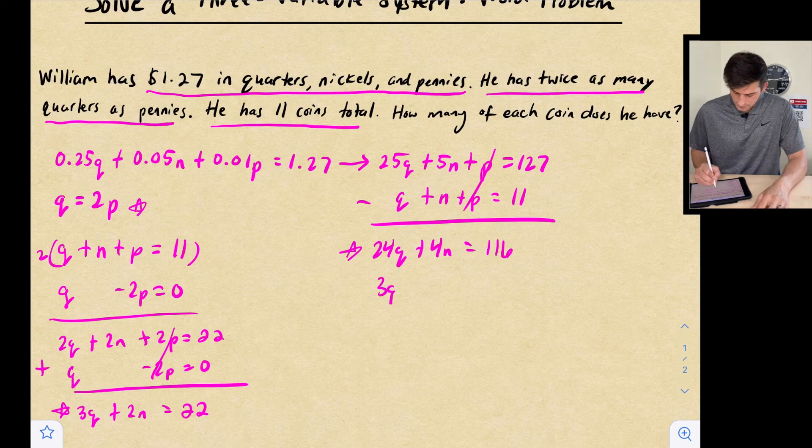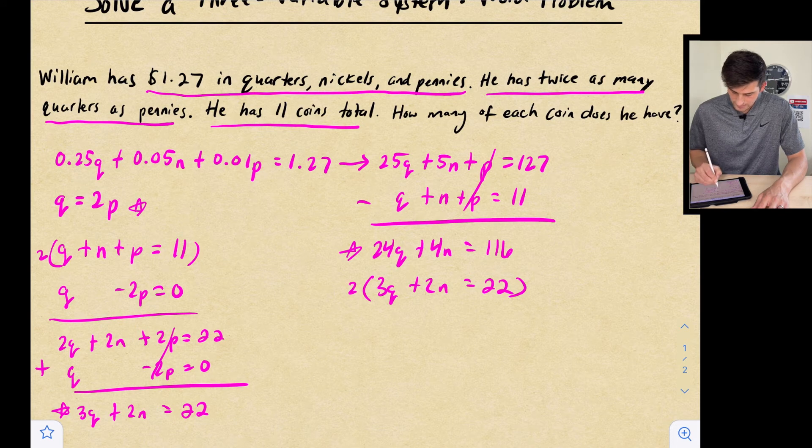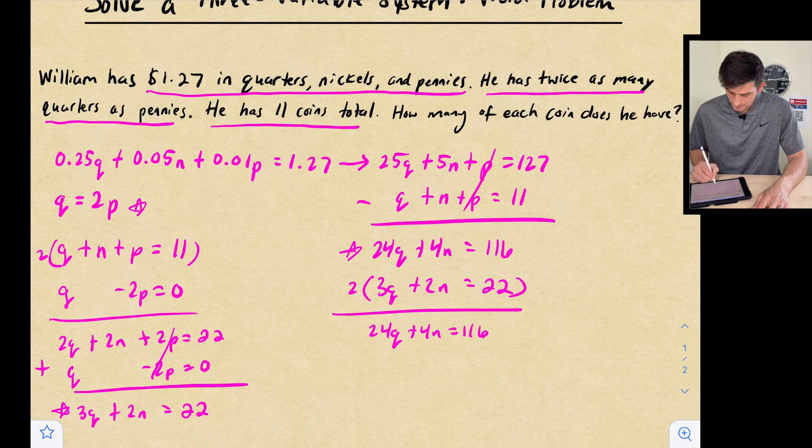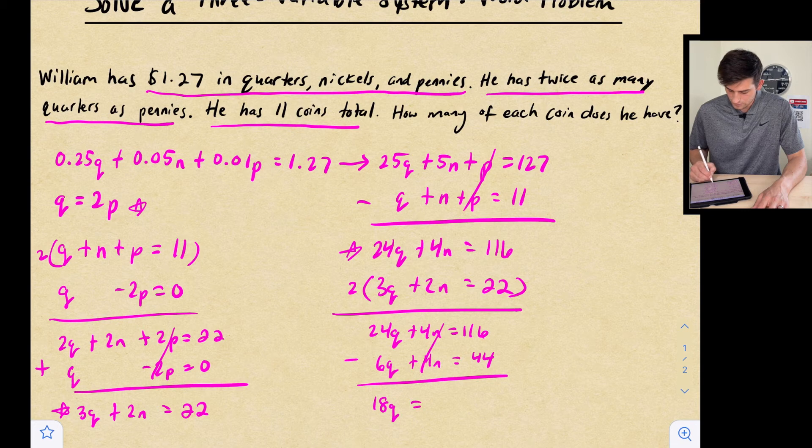We can now use it to eliminate over here. So we have 3Q plus 2N equals 22. And I'm going to eliminate N. So let's multiply this equation by 2. So I'm going to leave my top equation, 24Q plus 4N equals 116. But now we have 6Q plus 4N equals 44. And now we can subtract these. 24Q minus 6Q would be 18Q. 4Ns go away. And this is going to give me 72.